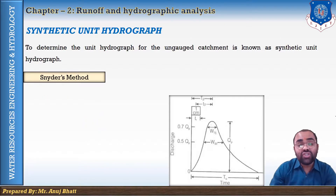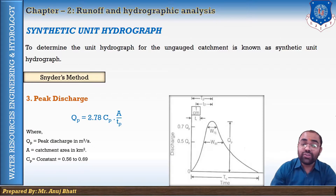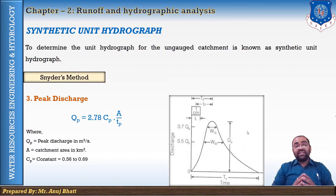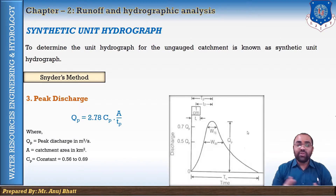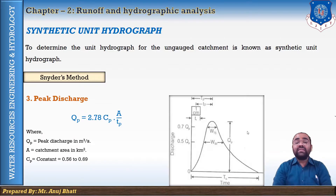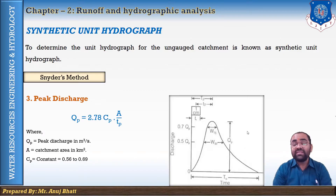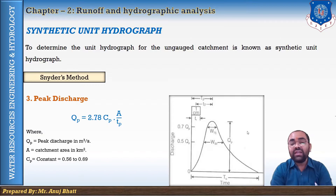The formula for peak discharge qp is: qp equals 2.78 Cp times A divided by tp, where qp is the peak discharge in cubic meters per second, A is the catchment area, tp is the basin lag, and Cp is a dimensionless regional constant representing the retention and storage capacity of the basin. The value of Cp is generally found to be between 0.56 and 0.69.